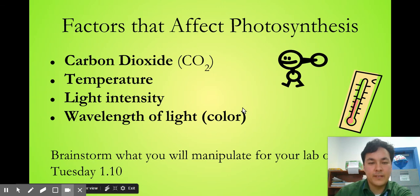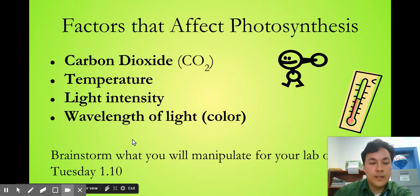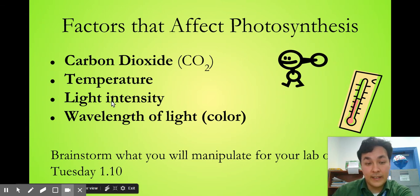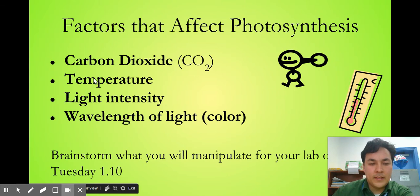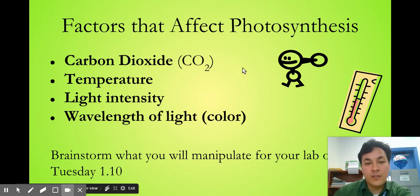Last thing here: some factors that affect photosynthesis. You did your lab on this — a lot of you did color of light, putting saran wrap over your beakers. Some of you did light intensity, like how close the light bulb was. Nobody really did temperature, and not too many did carbon dioxide. But these are the four factors that can affect the rate of photosynthesis. You should research them and see what ranges are best for photosynthesis.